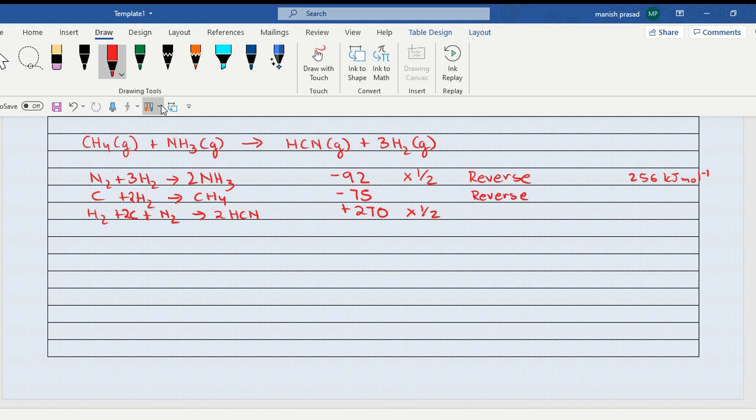Now first things first: what do we have to look at in the equation is we have to match it with the equation that we have to form, that is this one. Iske according hume equations laane. So we are going to reverse it and multiply it by half. It would become NH3 giving us half N2 plus 3 by 2 H2, and this would become minus 46, sorry, positive 46. If I go wrong, you are supposed to correct me. Second one: methane is in the reactant, here it is given in the product, one mole, one mole. So we do nothing except reverse it. So methane is C plus 2 H2, and this becomes plus 75.